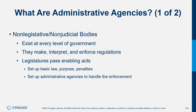Examples of administrative agencies — sometimes called executive agencies — include the Department of Energy, Department of Education, and Department of Justice. These are high-level administrative agencies that have sub-agencies reporting to them. The Department of Justice, for example, has the FBI and the Bureau of Alcohol, Tobacco, and Firearms.